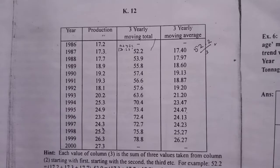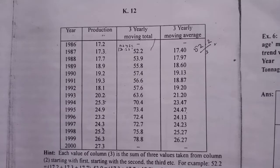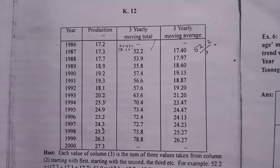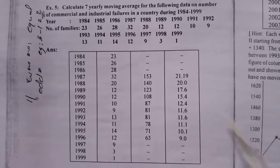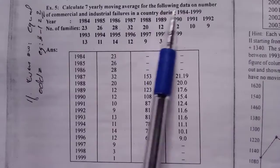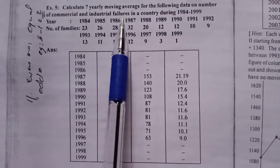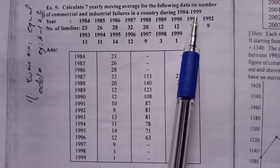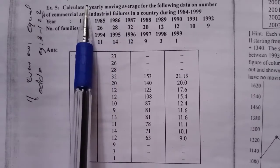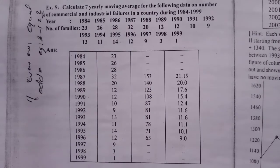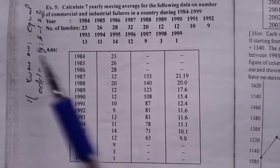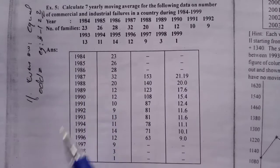Problems are done. First year, last year, moving average figures — that's what we do for the 3-yearly moving average. The next problem: calculate the 7-yearly moving average for the following data on number of commercial and industrial failures in a country during 1984 to 1999. Now we calculate the 7-yearly moving total and 7-yearly moving average.